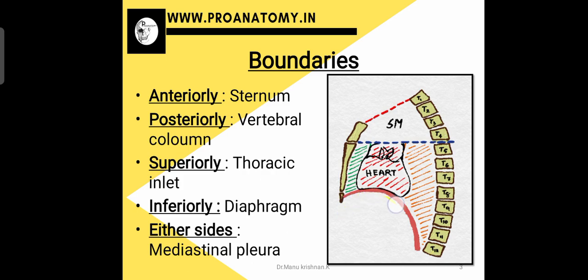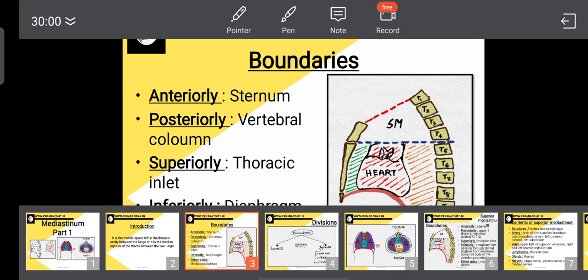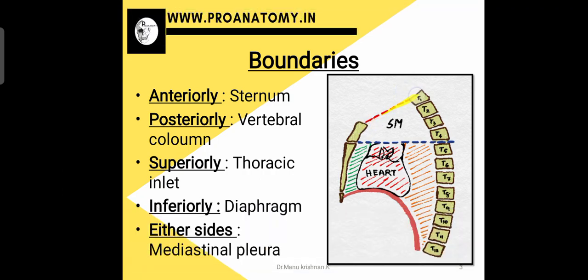Inferiorly, the mediastinum is bounded by a muscular structure called the diaphragm, which separates the thoracic cavity from the abdominal cavity. Superiorly, there is a dotted red line representing the thoracic inlet. The thoracic inlet is the opening present in the neck region to facilitate the passage of structures coming from the neck.